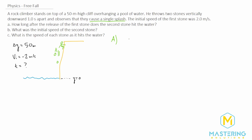The equation we'll use is: Y final = Y initial + v initial × t + ½ × a × t². We can simplify because Y final is zero. Rewriting it: ½at² + v_initial × t + Y_initial = 0. We've just created the quadratic form Ax² + Bx + C, where x is time.